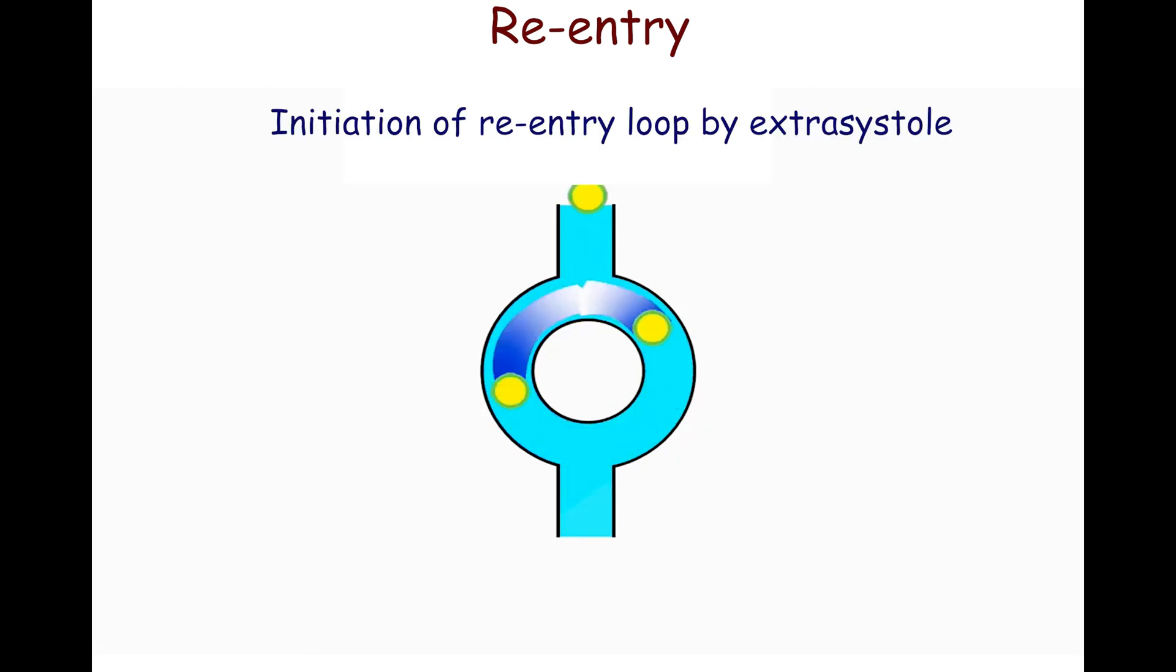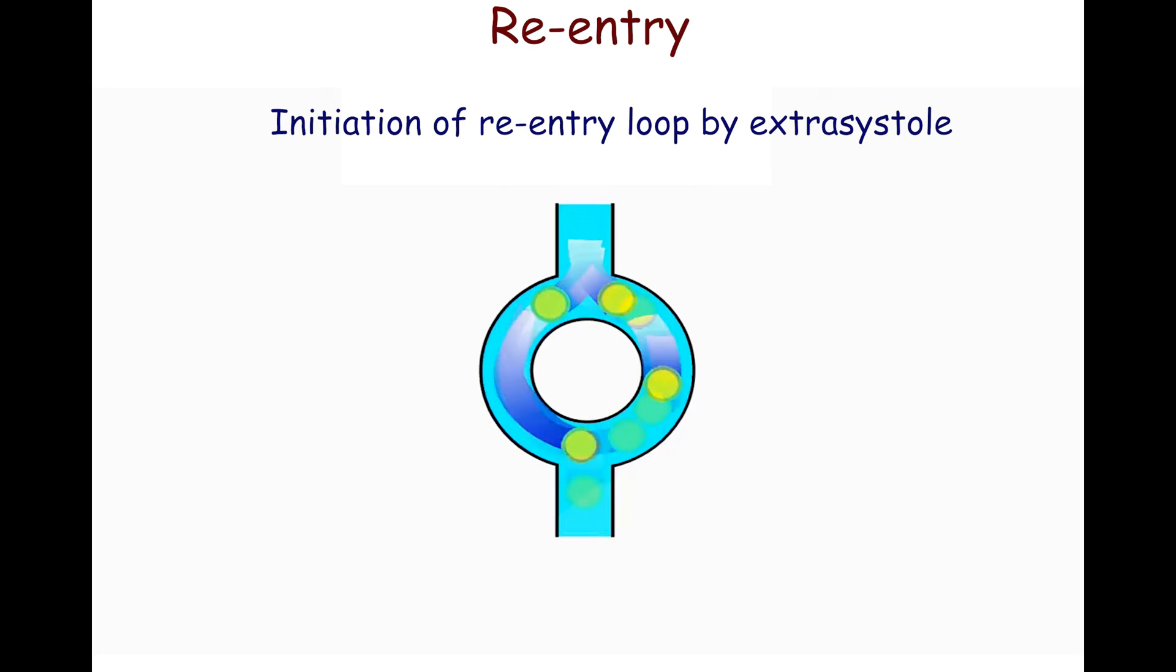Circulation of impulses in the reentry loop is triggered by an extrasystole. The extrasystole occurs when the fast pathway is still in its refractory period. The impulse spreads antegradely through the slow pathway, exiting the refractory period, then moves retrogradely via the fast pathway. The impulse exits the reentry loop in proximal and distal directions.